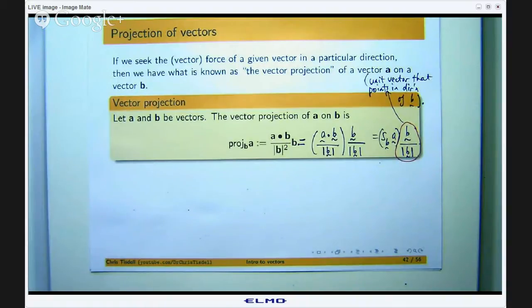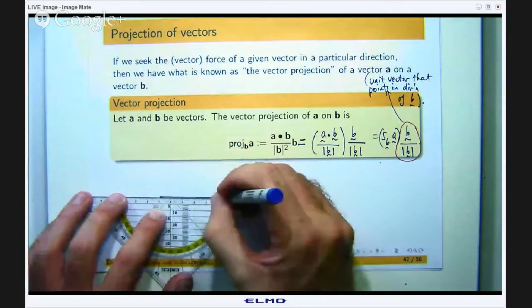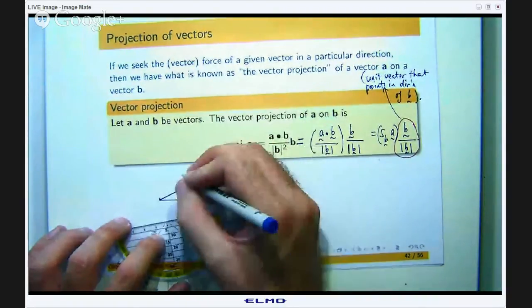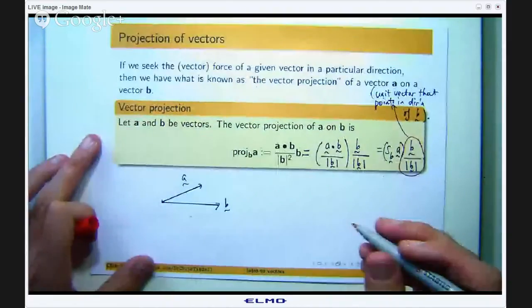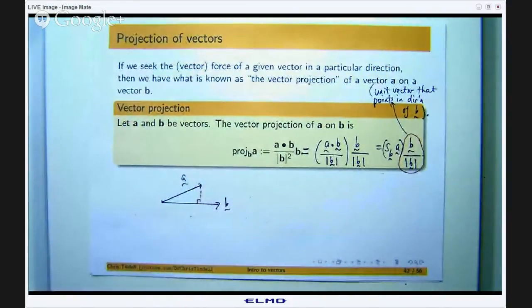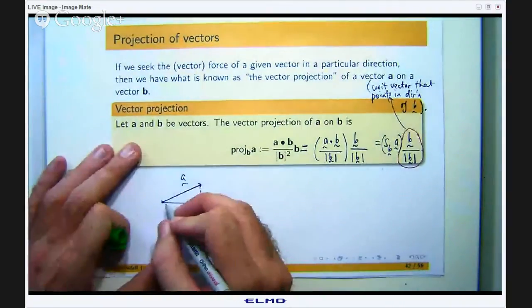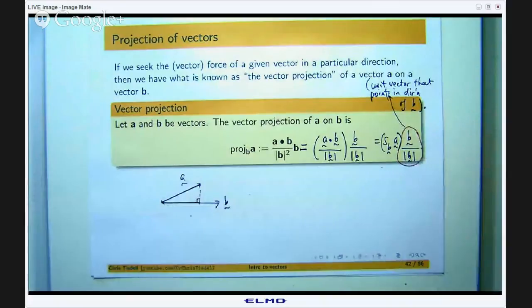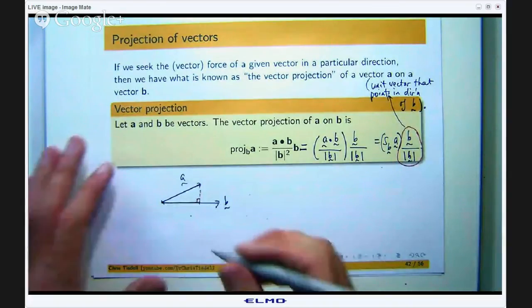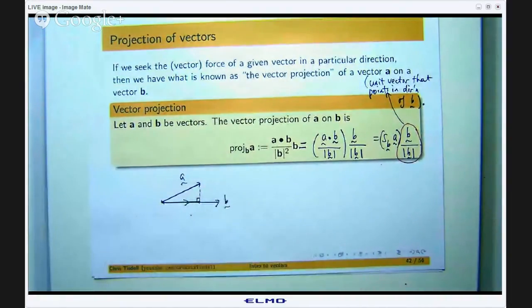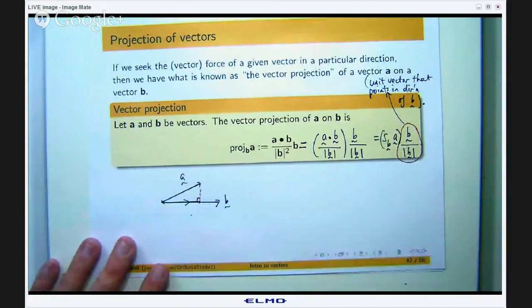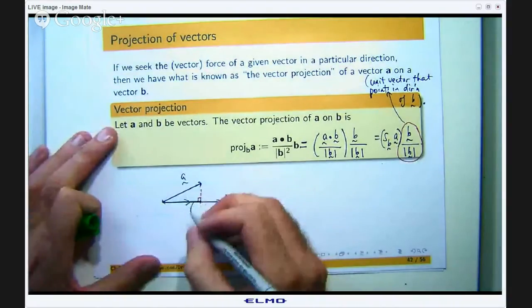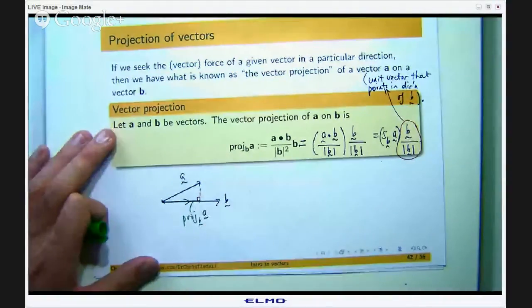Let me show you what we are calculating here now. Suppose again I have a vector B there and I have a vector A there. Let us draw a little right angle triangle in like we did before. What we are doing now, at least in this picture, is taking that length there and multiplying it through by this unit vector to form a new vector in the same direction as B but with this length or the absolute value of that length.